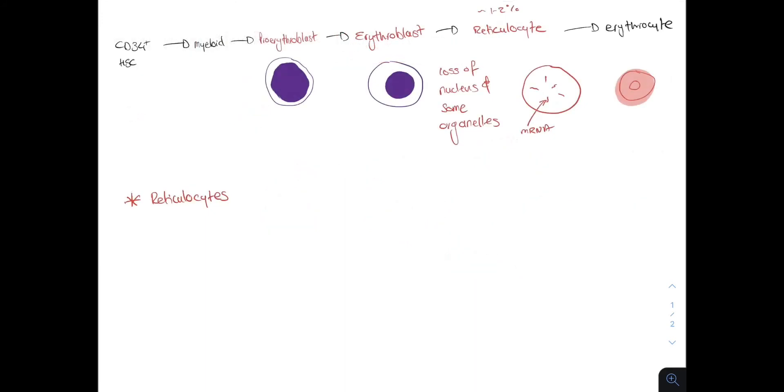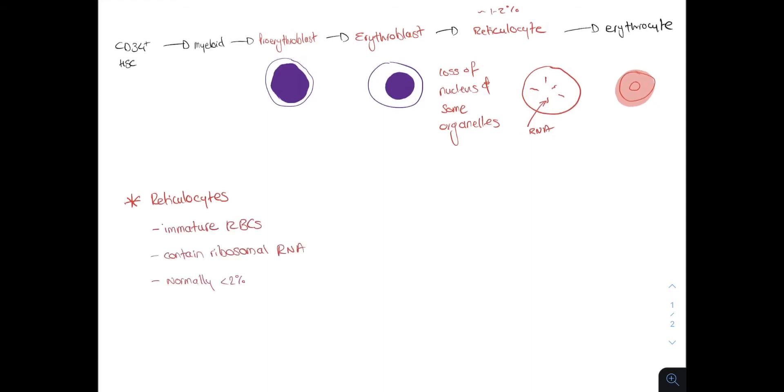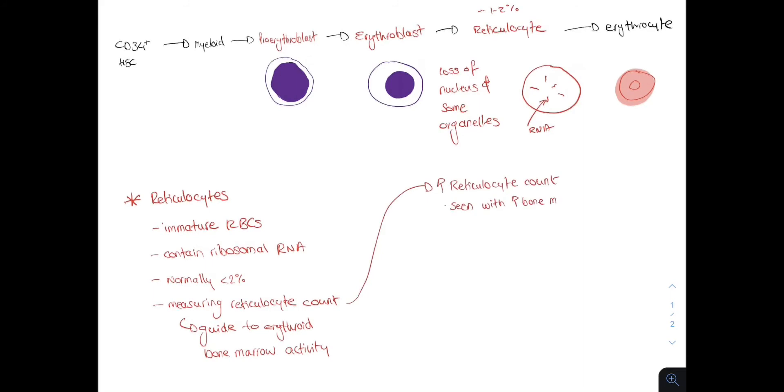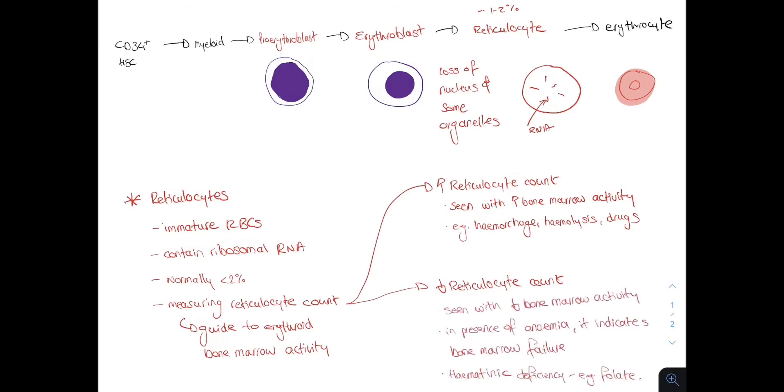Let us focus a little on the reticulocytes. These are immature red blood cells. They contain ribosomal RNA and are normally present at less than 2%. Measuring the reticulocyte count is very important as it gives a guide to the bone marrow activity. You can have an increased reticulocyte count with increased bone marrow activity, for example during hemorrhage or hemolysis, whereas reduced reticulocyte count suggests poor bone marrow activity, such as bone marrow failure.